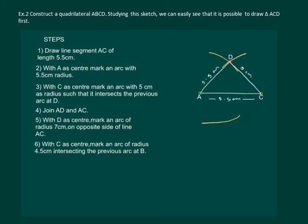Now with C as center, mark an arc of radius 4.5 centimeters such that it intersects the previous mark at point B.